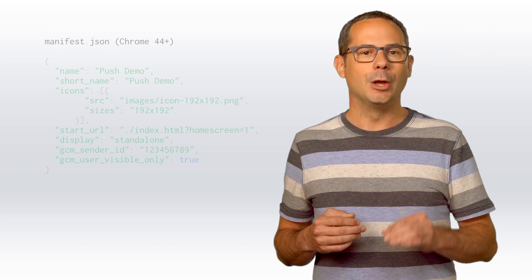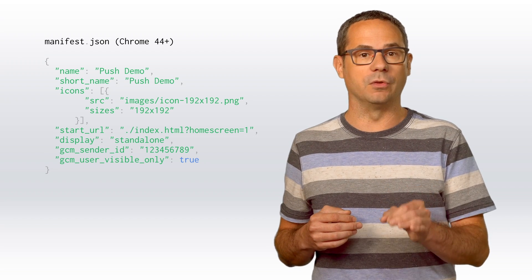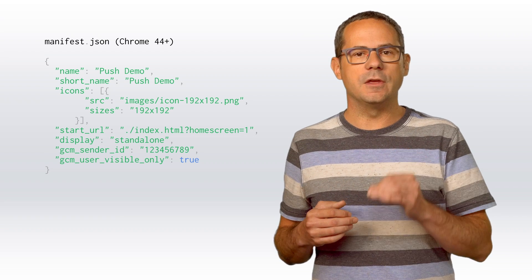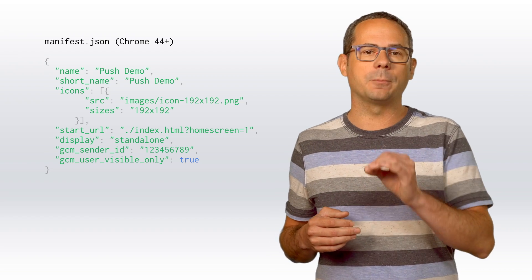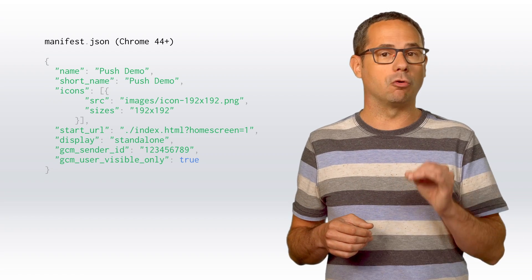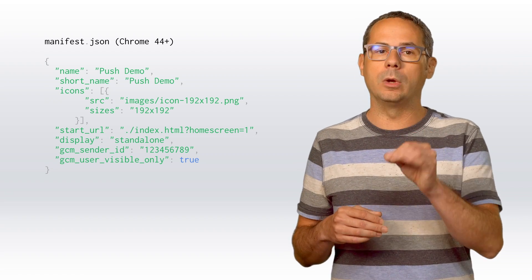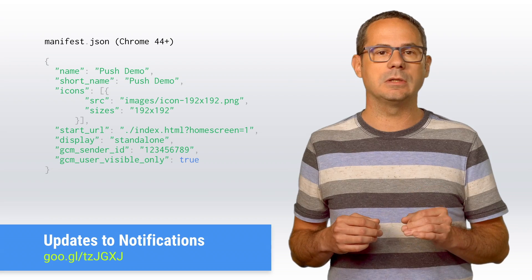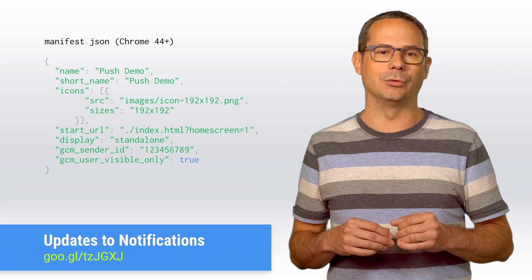If you've been using push notifications, there are a few updates to be aware of. You no longer need to include GCM userVisibleOnly true in the manifest file. Instead, this parameter is moved to the subscribe method on the service worker and is passed as a parameter userVisibleOnly true. Also, the need for subscriptionID has been removed from the spec. It's still available in Chrome 44, but will be removed from Chrome 45. Check out the link in the description for details on how to deal with this until all of your users have upgraded.